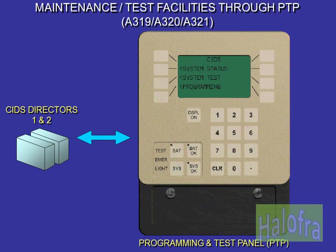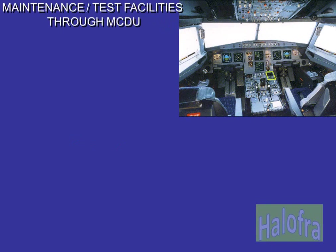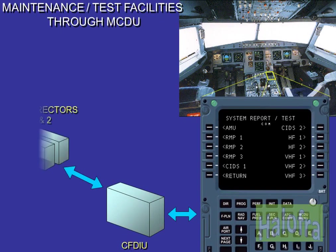The CIDS byte is accessible from the PTP and also from the MCDU through the CFDIU. On the A318, the CIDS director byte is only accessible from the MCDU through the CFDIU.